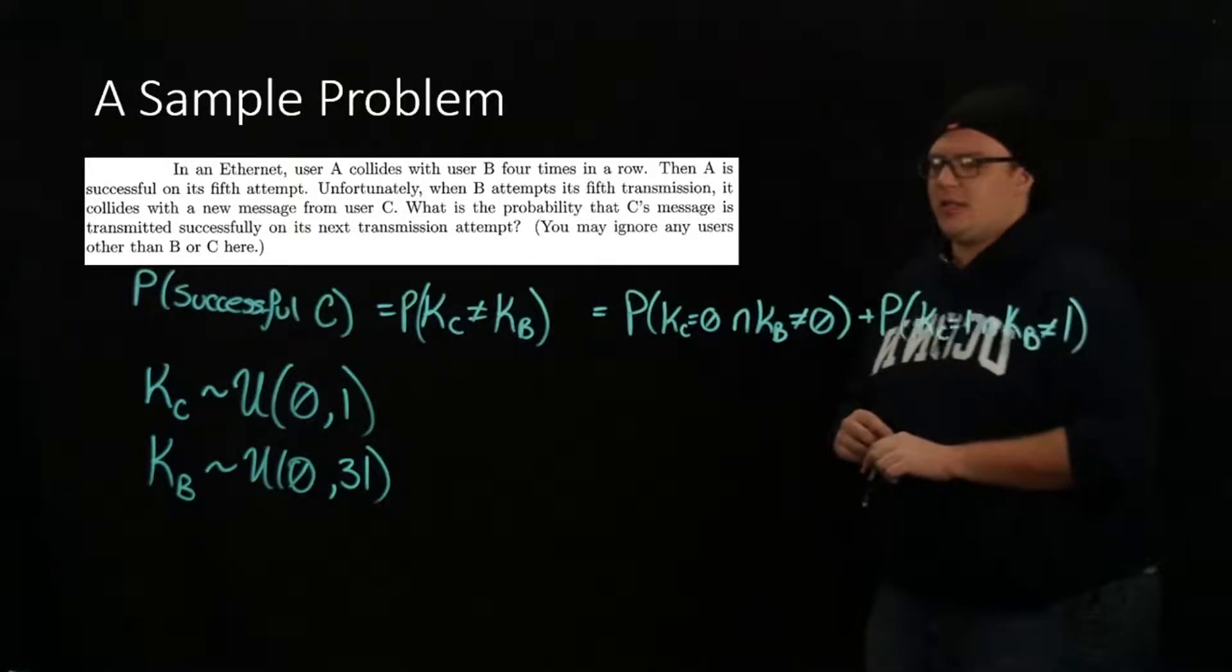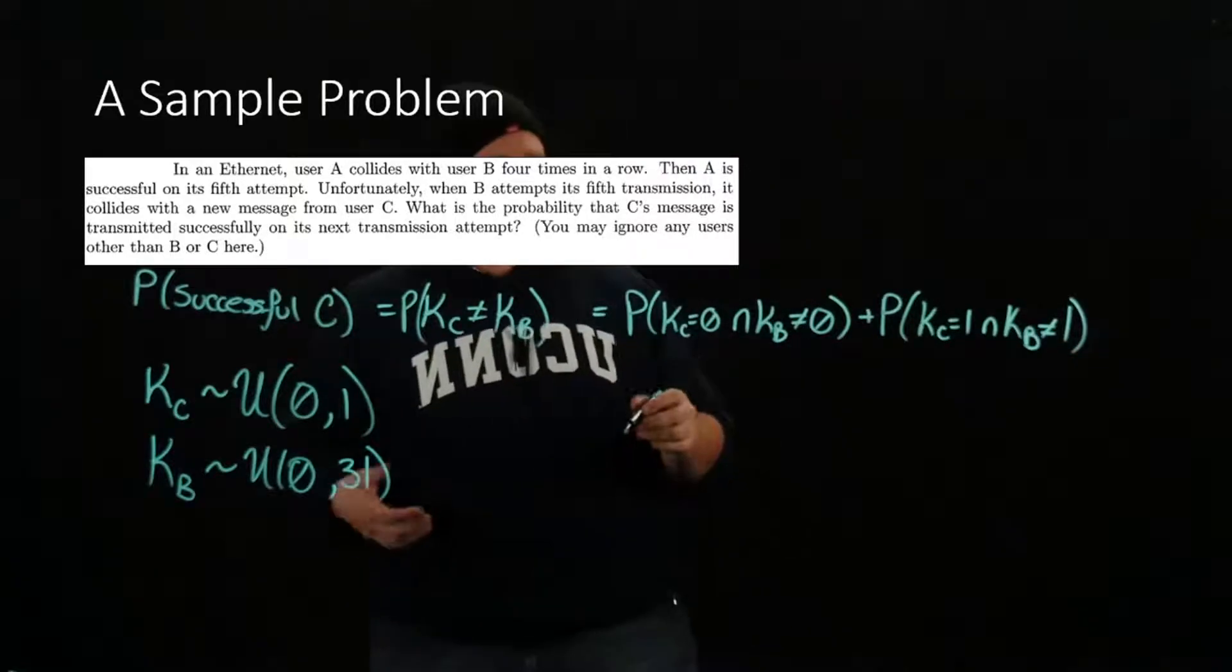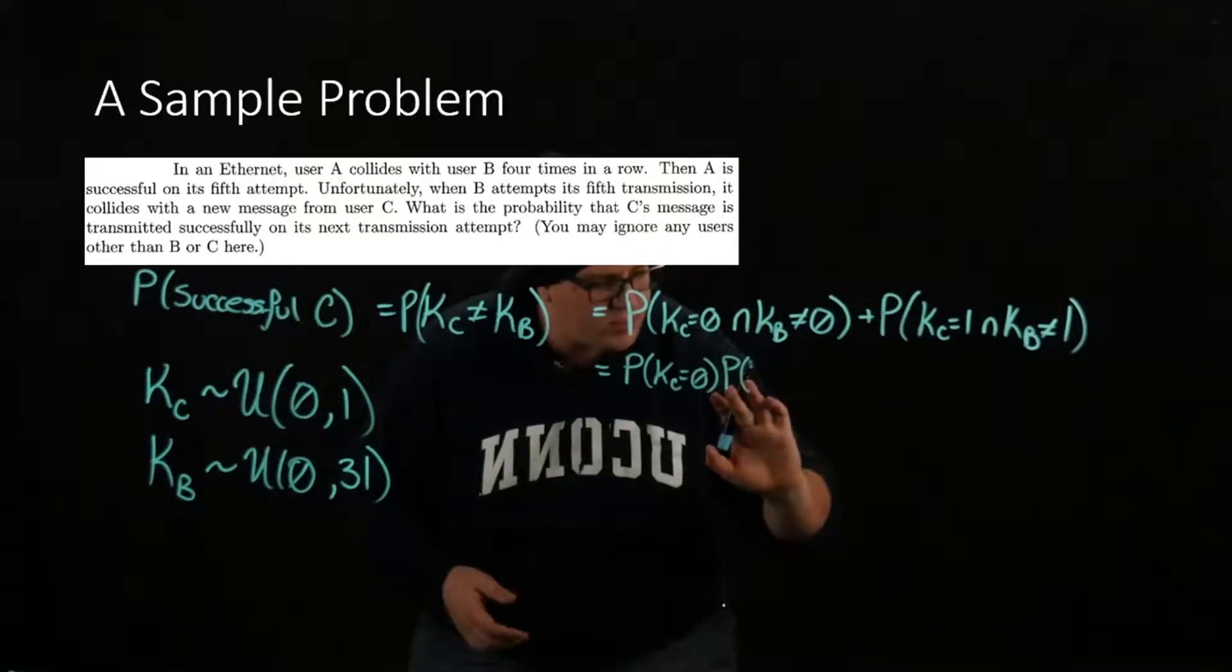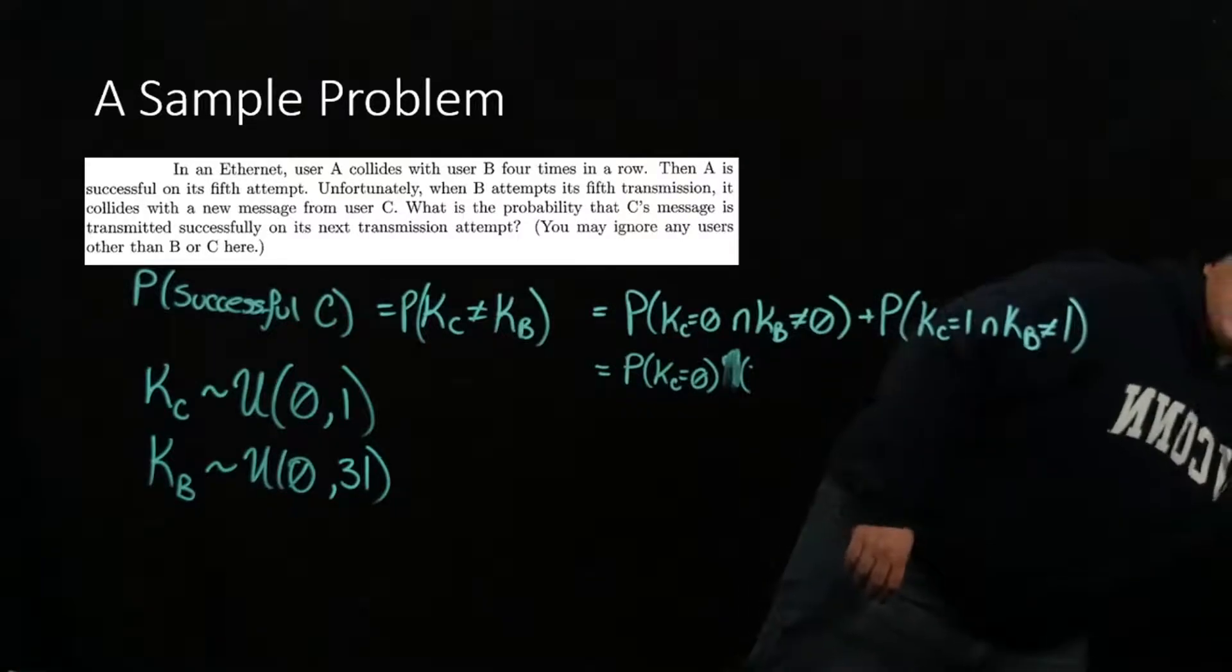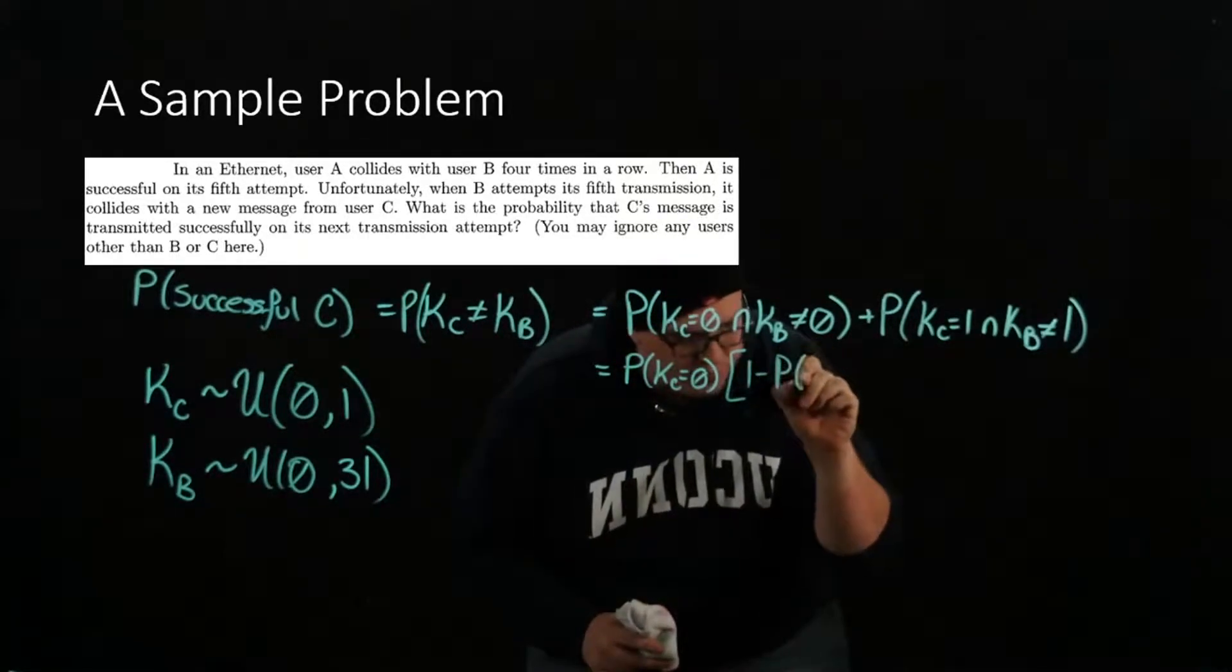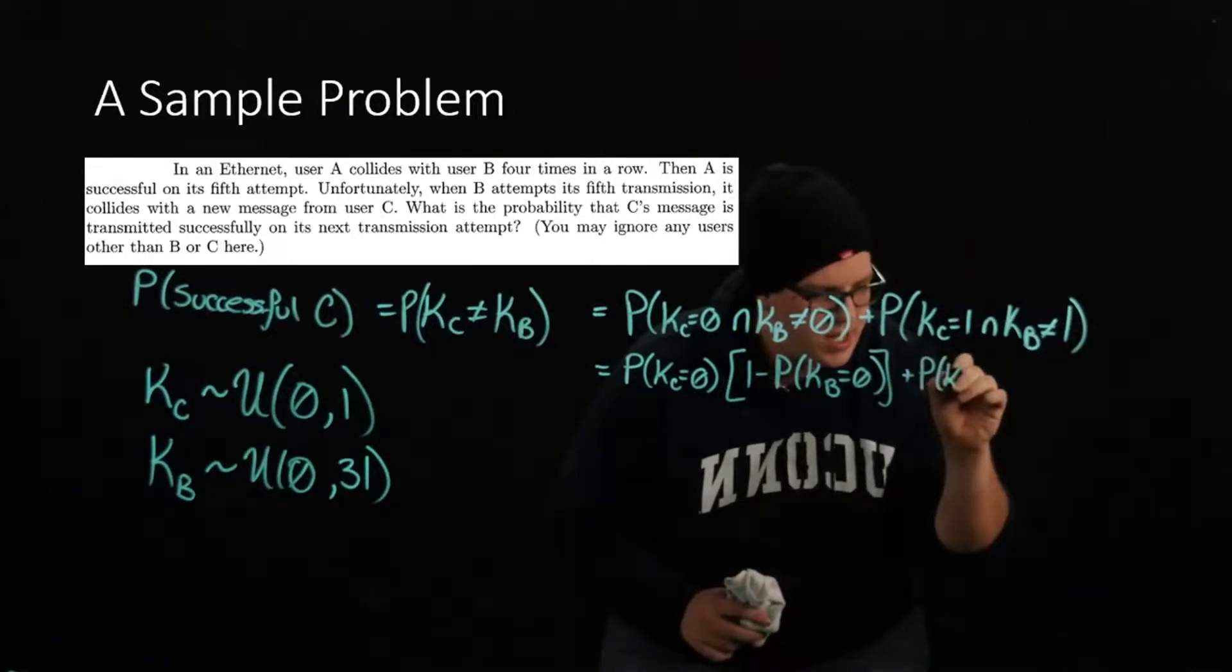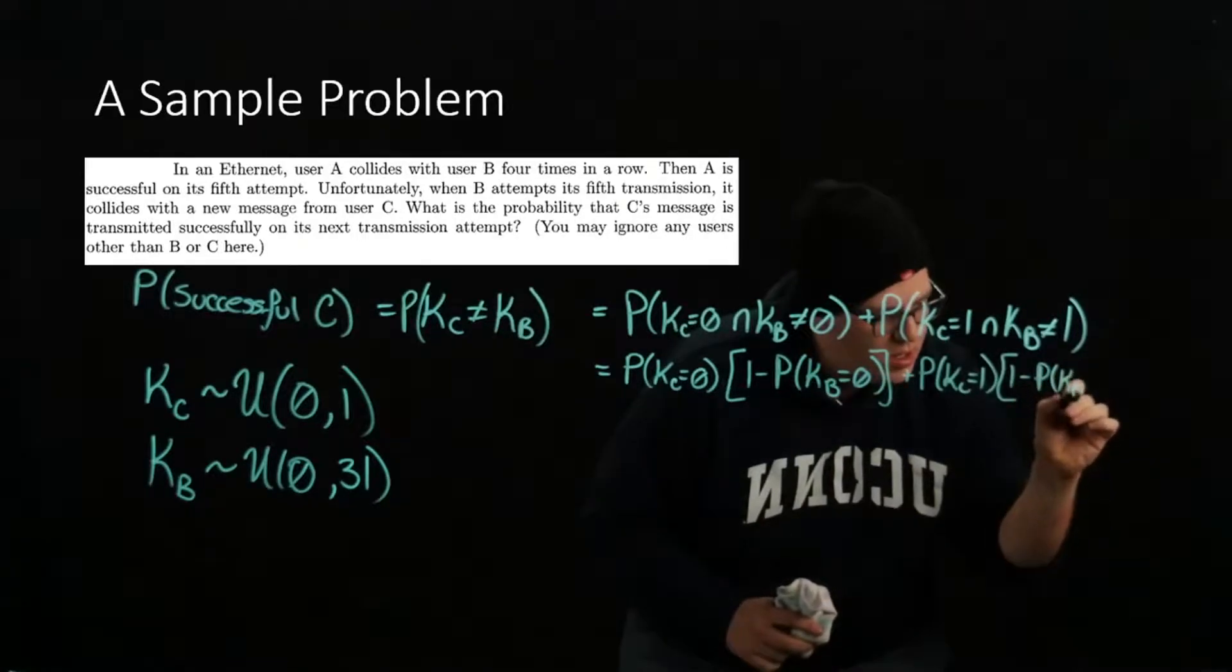We can calculate these probabilities. The intersection of these two events is nice because they are disjoint and independent. So if they are independent, we can write this as the probability that KC equals 0 times the probability that KB does not equal 0, which we can write as 1 minus the probability that KB equals 0. And then we add the probability that KC equals 1 times 1 minus the probability that KB equals 1.